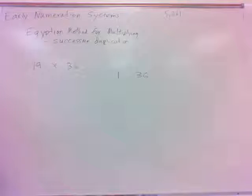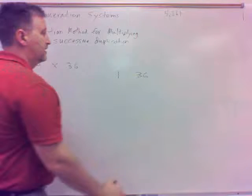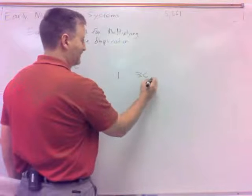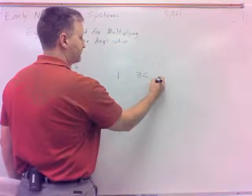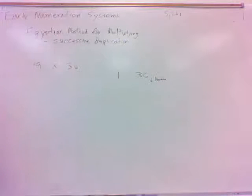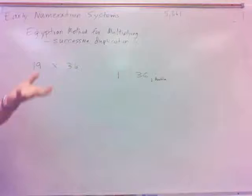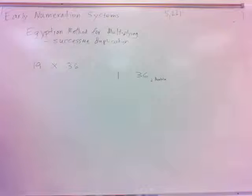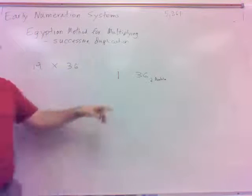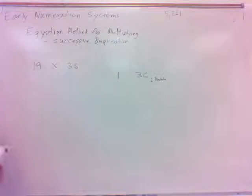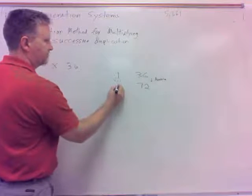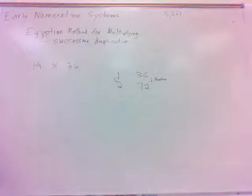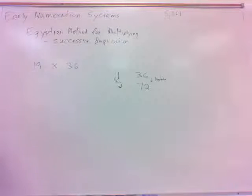Here's the way they would do it. What they would do is they would take the larger of the numbers. Of course, I'm using our numbers now. Of course, they would have theirs and heel bones and stroke marks and all that, but I'm just going to use our numbers. What they would do is they'd take the larger number, which in this case is 36, and then write a 1 beside that. So, if it had been 19 times 45, we would have put 45 with a 1 beside it. So whatever the larger number is, put a 1 beside it. Called successive duplication because what we're going to do is we're just going to start doubling.